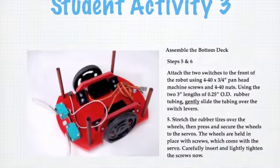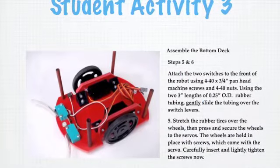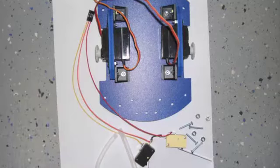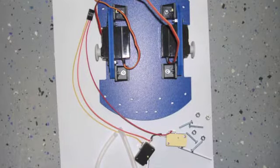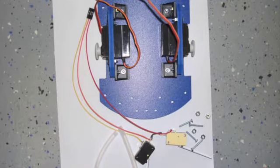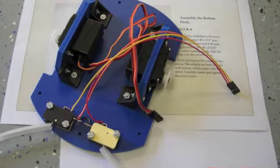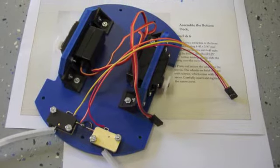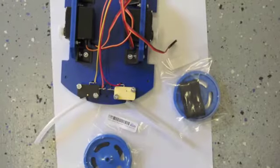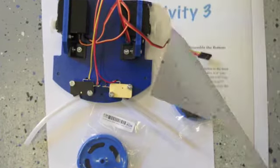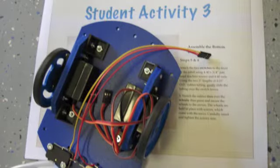In student activity three, they get to mount a lot of the things on the bottom deck. In addition to the servos, they'll mount the switches and they'll get to install the wheels onto the servos. And there's the wheels, and there's what it looks like when it's finished right here.